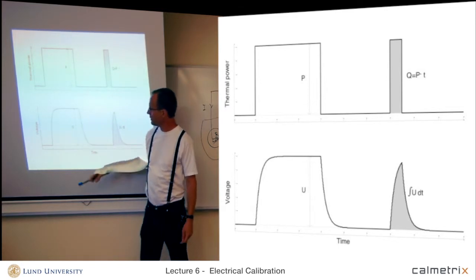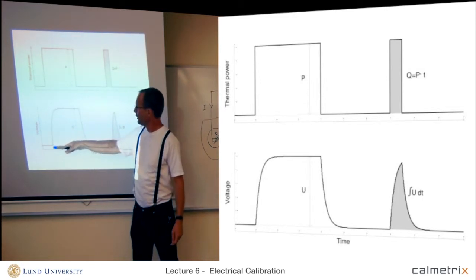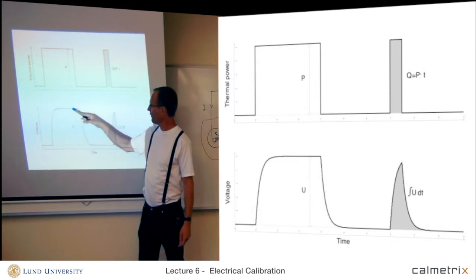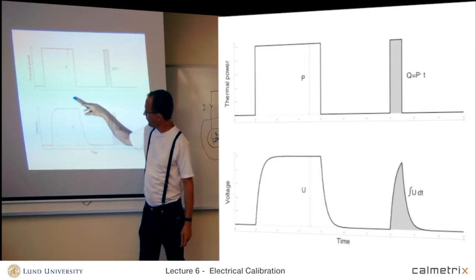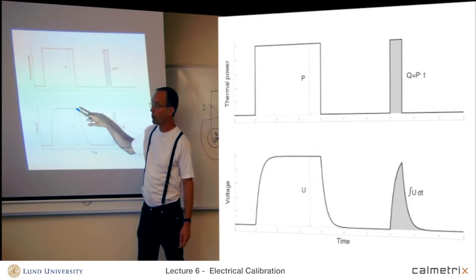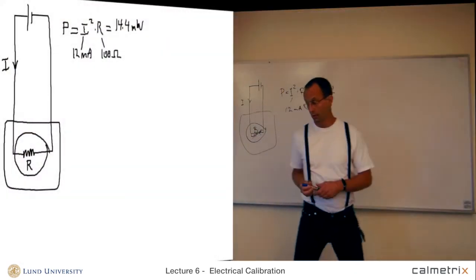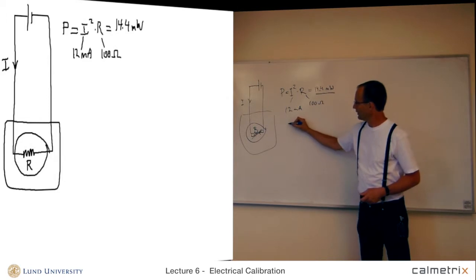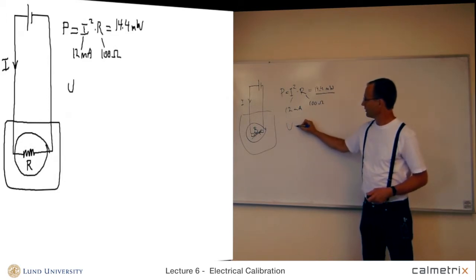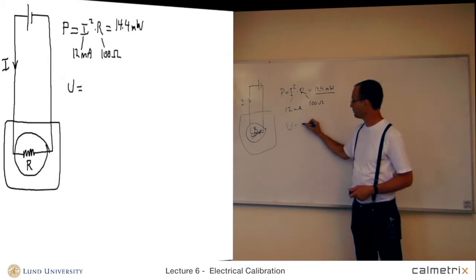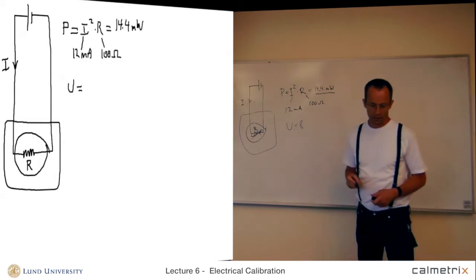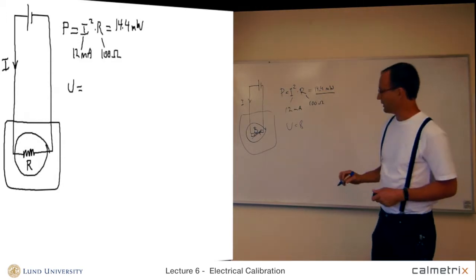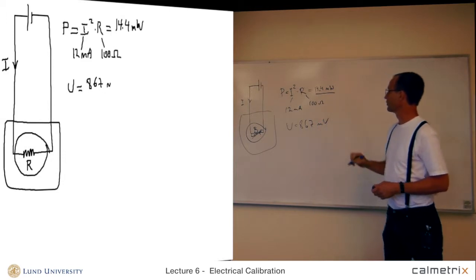And the output from the calorimeter looks something like this. Go up to a steady level and then go down again. And if you look at the steady state part, we have a certain voltage output from the heat flow sensor. This is called U. Let's assume that this is 867 millivolts.